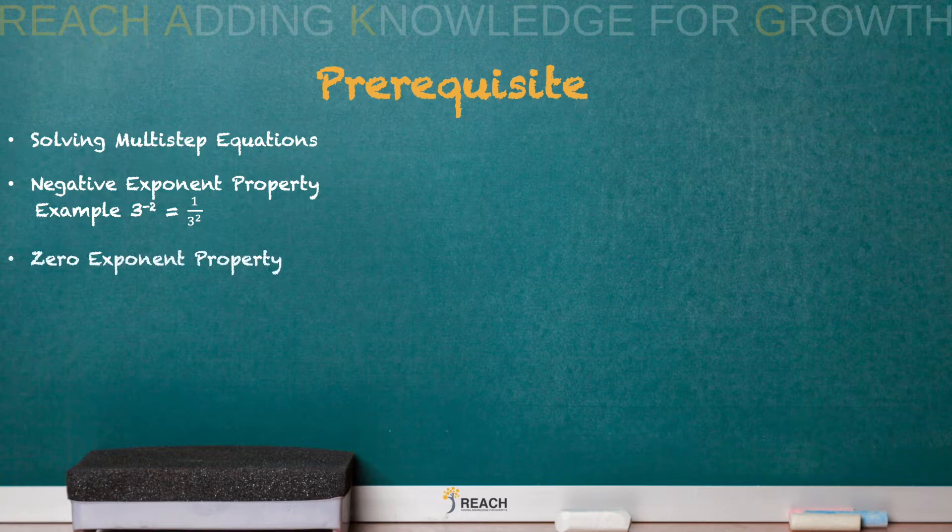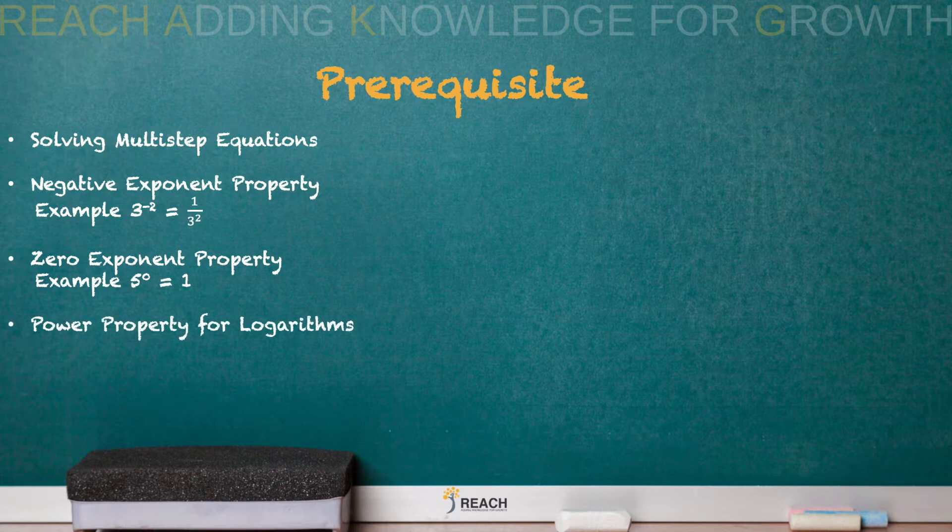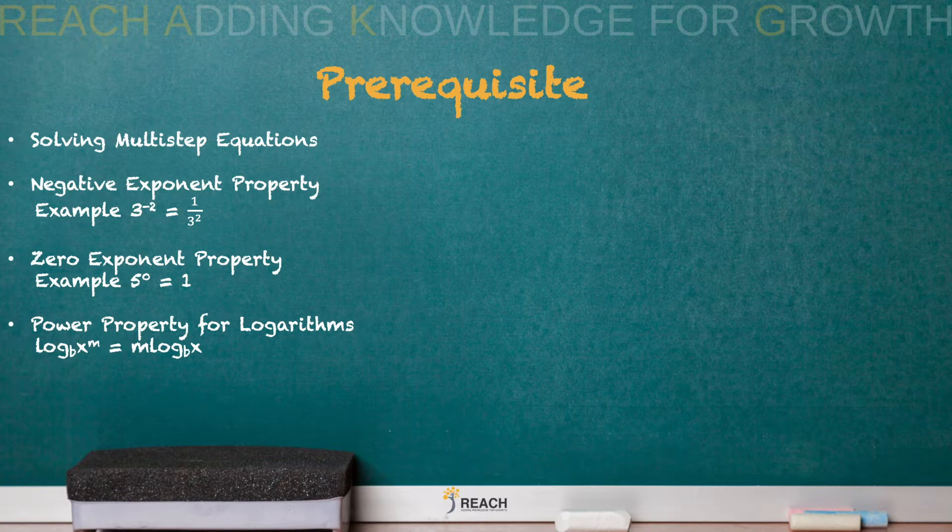So you could have 1 over 9 as that answer as well. Zero exponent, anything to the 0 power is number uno, 1. And then your power property is when you have an exponent power, you bring it to the front of the leading coefficient.